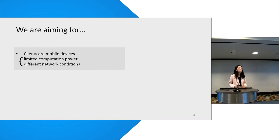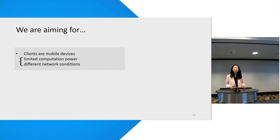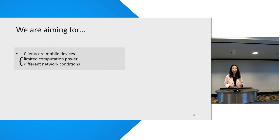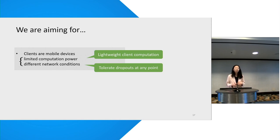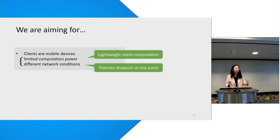A key feature of federated learning is that clients are the main participants instead of the server. These are mobile devices with limited computation resources, and they may get disconnected from the network at any point during execution. So a desired protocol should have lightweight computation for clients, and when some client quits in the middle of the computation, the protocol should still continue and eventually output the sum of the local weights from clients that stay online.